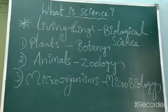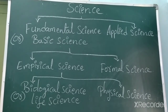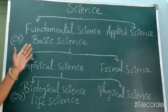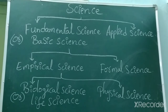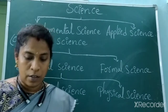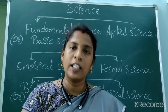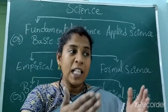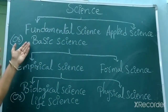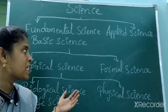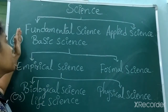So, science can be categorized as: fundamental science, applied science, empirical science, and formal science. Empirical science is further divided into biological science as well as physical science. Fundamental science is nothing but learning about what is present on the earth — studying each and every point which is present on the earth. It is also called basic science. For example, living and non-living things are present, and studying about them is fundamental science. Even what we learn in textbooks is part of fundamental science.